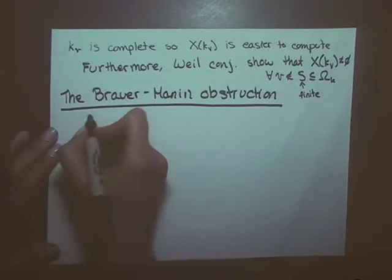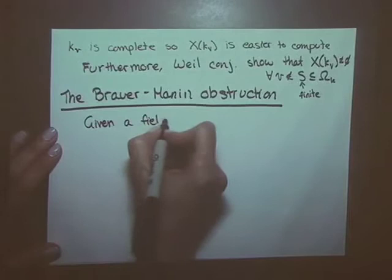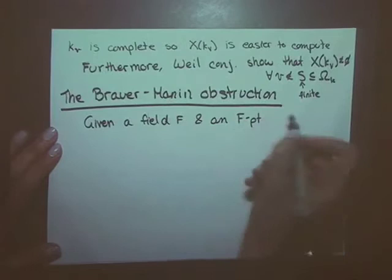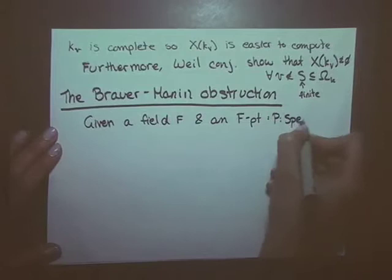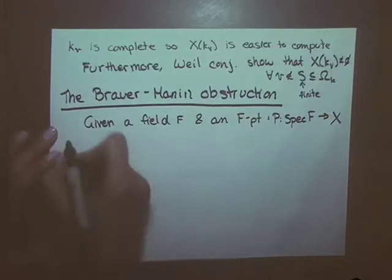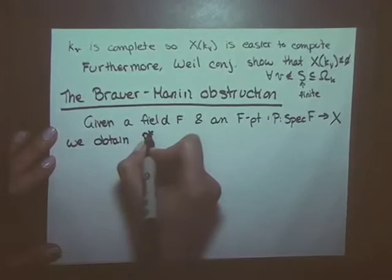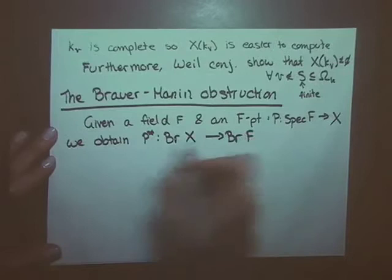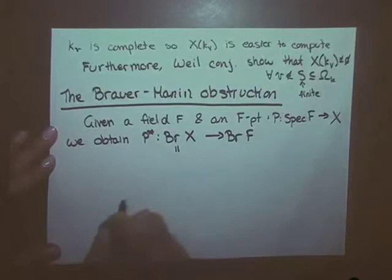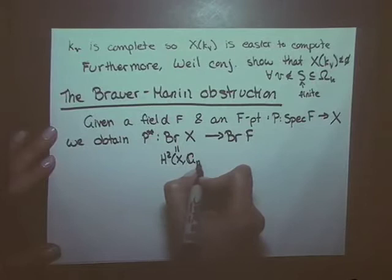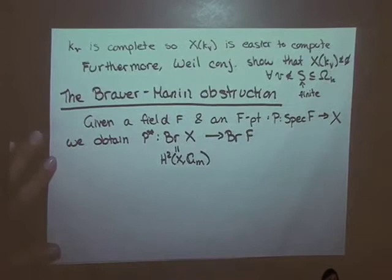Let f be any field. Given a field f and an f-point, I can think of it in terms of equations but also geometrically as a map from Spec f to X. We then obtain a pullback map on the Brauer group, from the Brauer group of X to the Brauer group of f. I'm always going to take the point of view that this is étale cohomology H²(X, G_m), and since X is smooth I can think of a Brauer class as an element of the Brauer group of the function field.